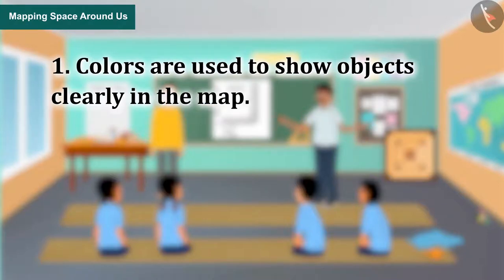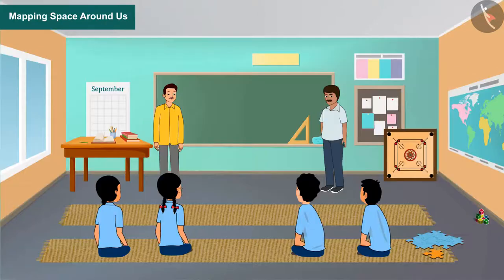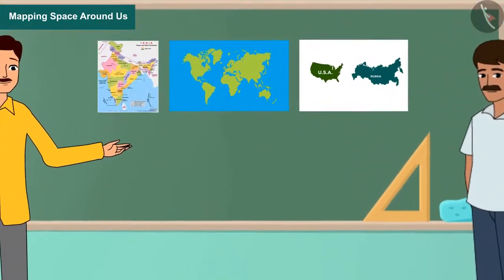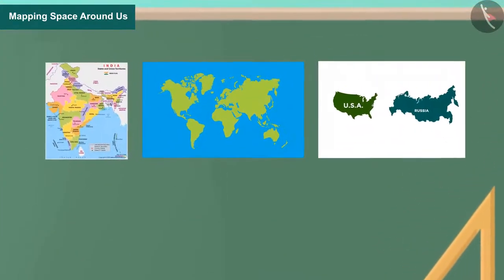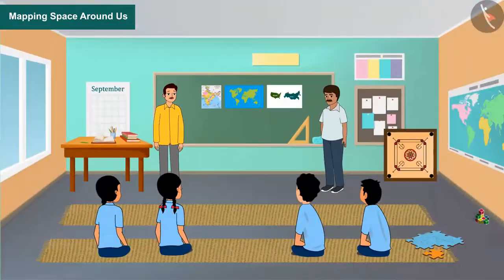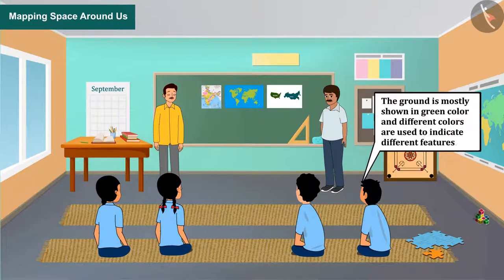Colors are used to show objects clearly in the map. A color is used to represent the objects of a group. We have all seen maps of India, the world, and other countries. With what color can we depict the sea, river, pond, etc.? The ground is mostly shown in green, and different colors are used to indicate different features.